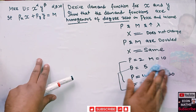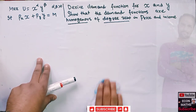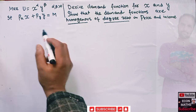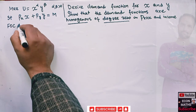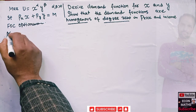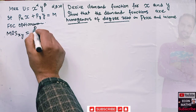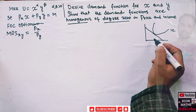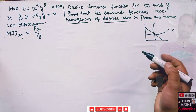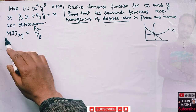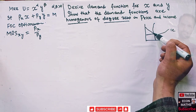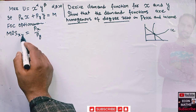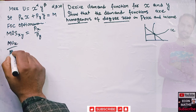Now let's come to the question and derive the demand function for good x and y. We have to maximize the utility function given the budget constraint. We use the first order condition for optimization, which requires that the marginal rate of substitution between two goods equals the ratio of their prices. Graphically, if this is our budget line and this is our indifference curve, at the optimal point the slope of the indifference curve is tangent to the slope of the budget line.